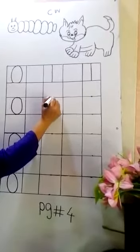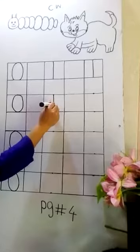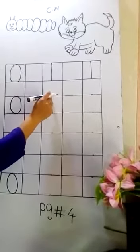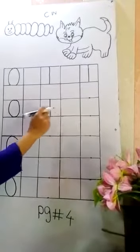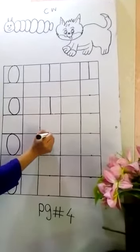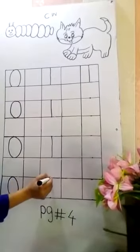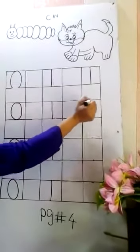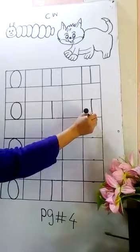Write with me. One. Start writing. Join the dot, set line up to down. This is one. Start from the dot, join the dot. This is one.